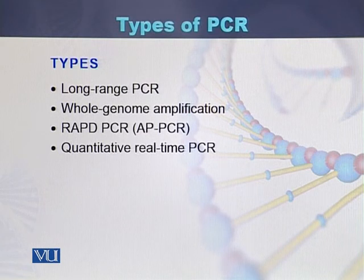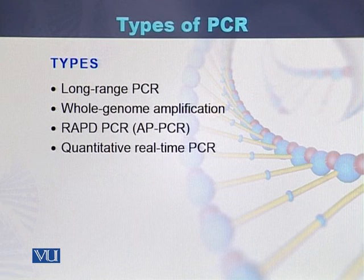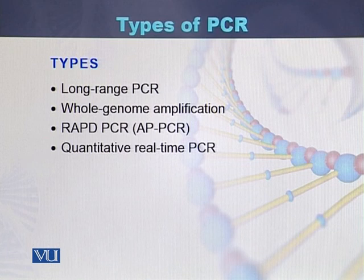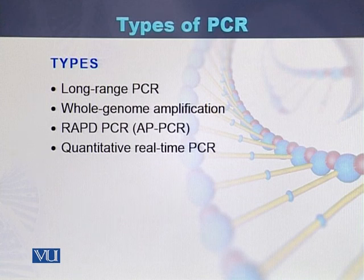Whole genome amplification is also a type of PCR in which we can amplify the whole genome. RAPD — Random Amplification of Polymorphic DNA — is a technique used to study different qualitative traits. Quantitative real-time PCR is a latest type of PCR in which we can quantify the amplification of DNA while the PCR cycle is ongoing, allowing us to check the quantity of DNA in real time.